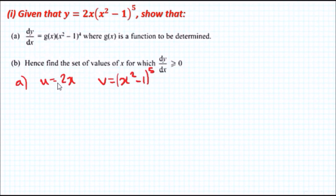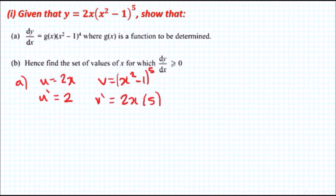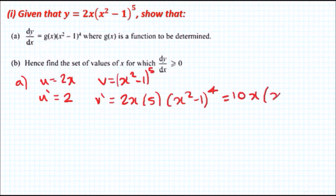All we have to do is differentiate both. So let's call u prime the derivative of 2x, which gives us 2. The derivative of v — we need to use the chain rule. The chain rule tells us to differentiate the inside of the function and then drop the power. The derivative of the inside is just 2x, multiplied by 5, and then the power decreases by 1, giving (x² - 1) to the power of 4. So 2x times 5 is 10x, giving v prime = 10x(x² - 1)⁴.